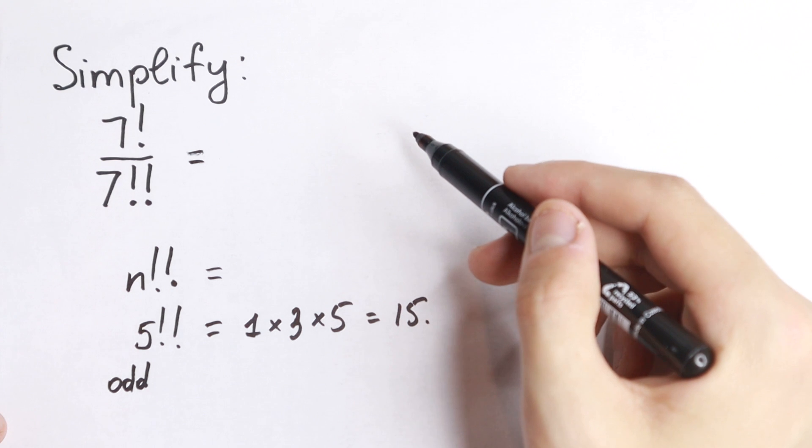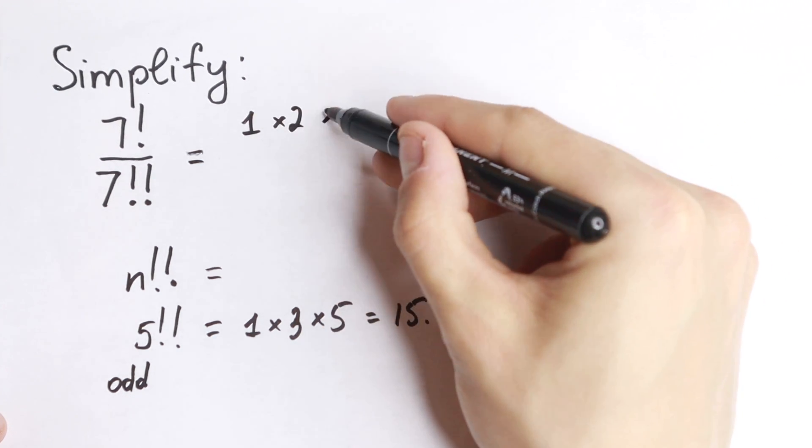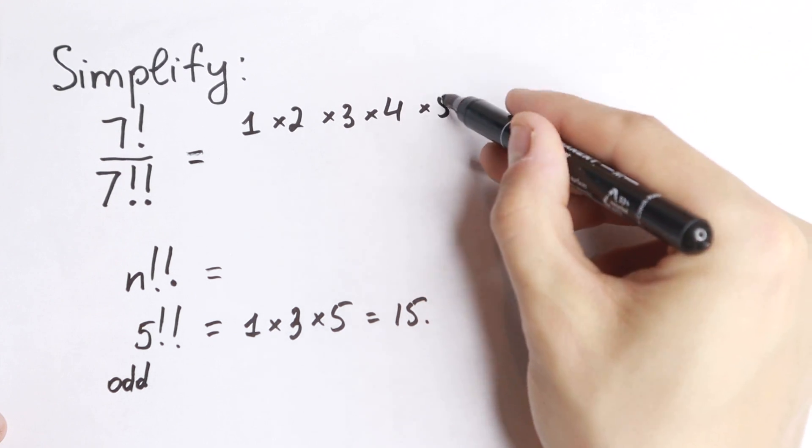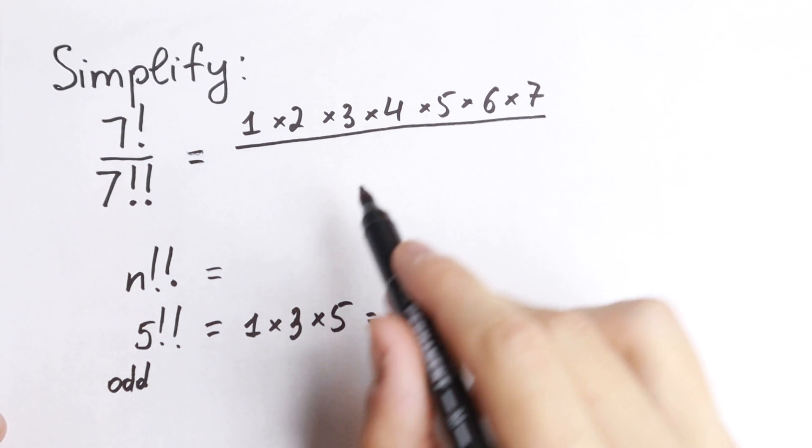Now let's look at our problem. We have 7 factorial, which equals 1 times 2 times 3 times 4 times 5 times 6 times 7. And we divide it by 7 double factorial.